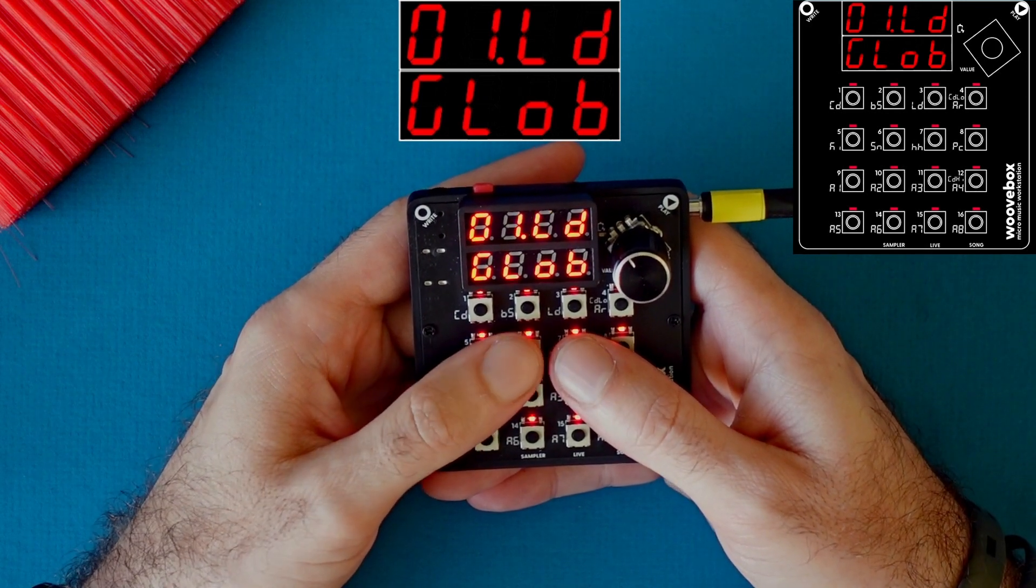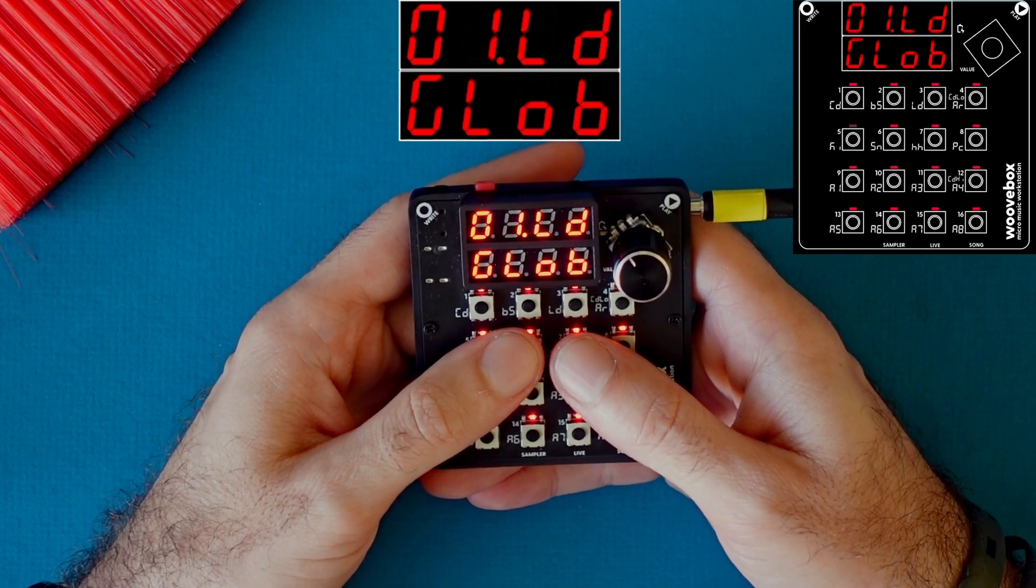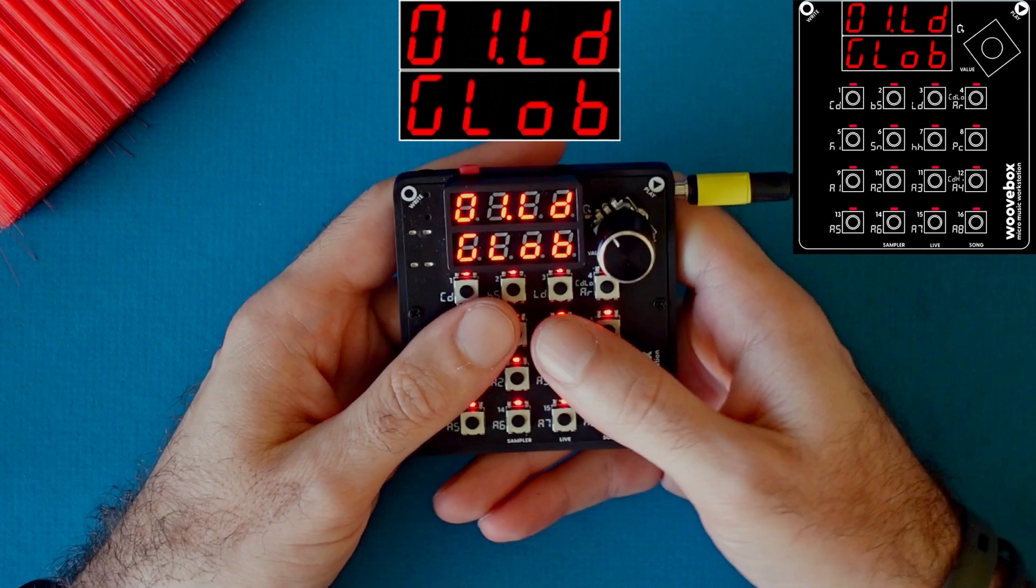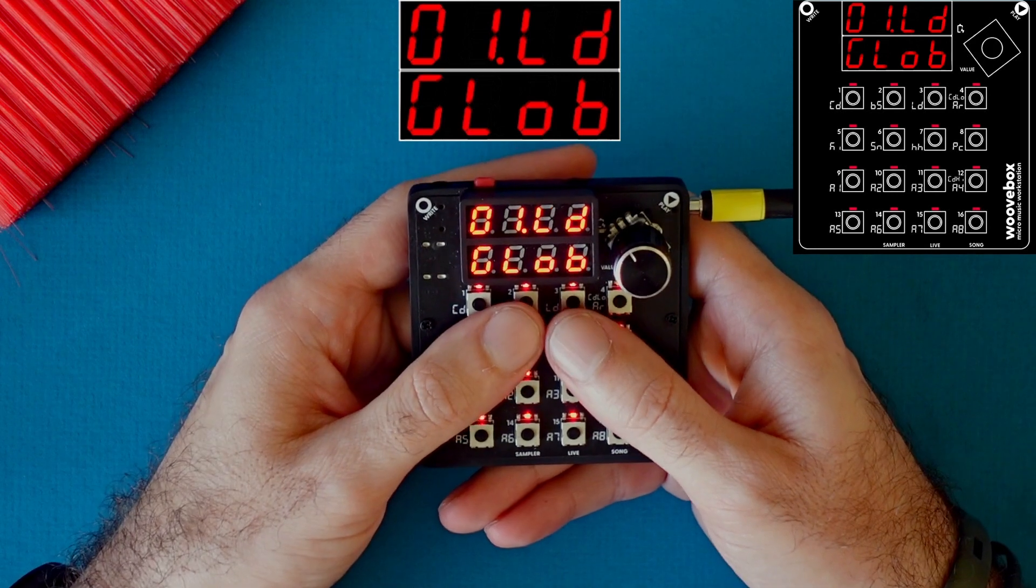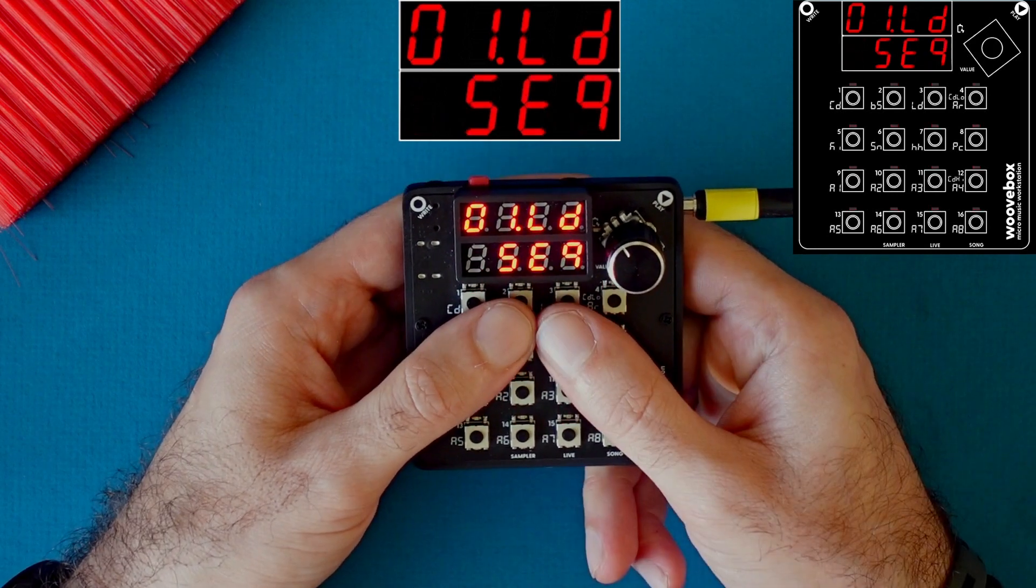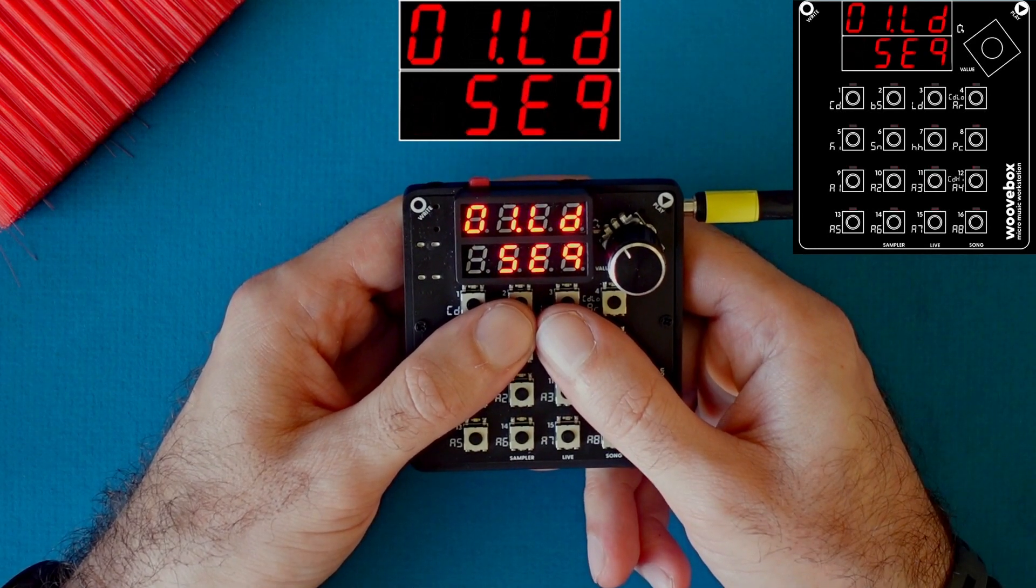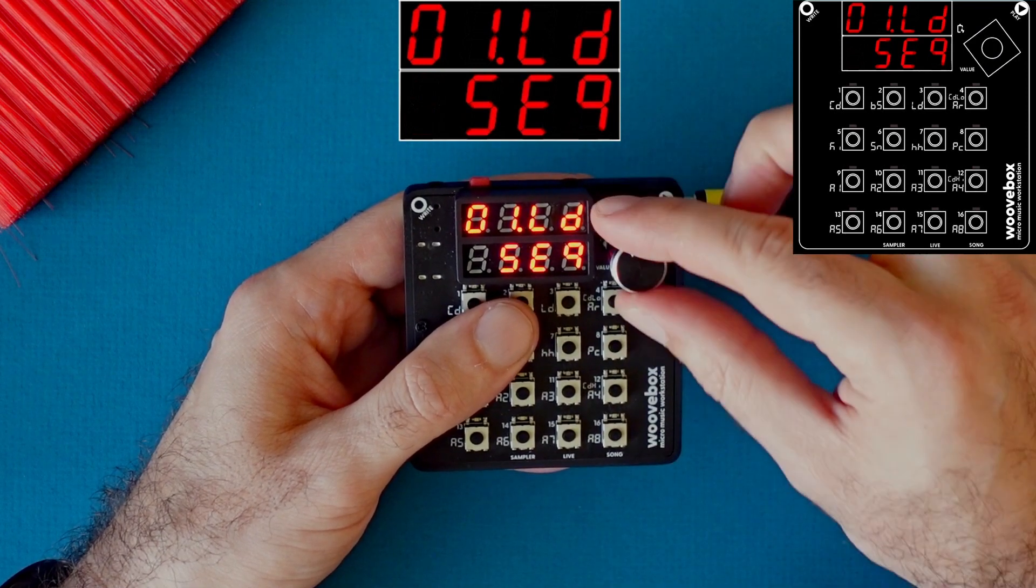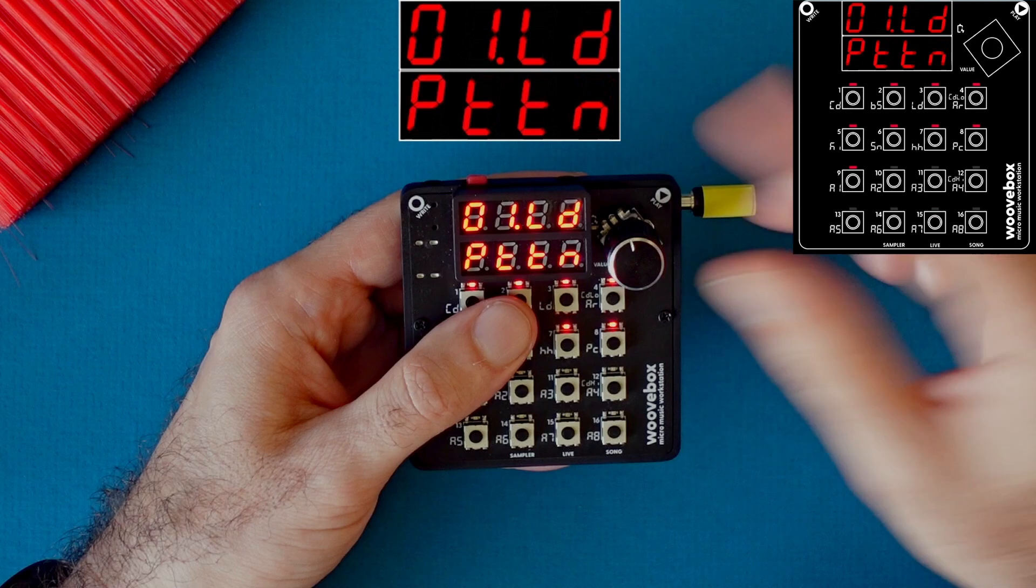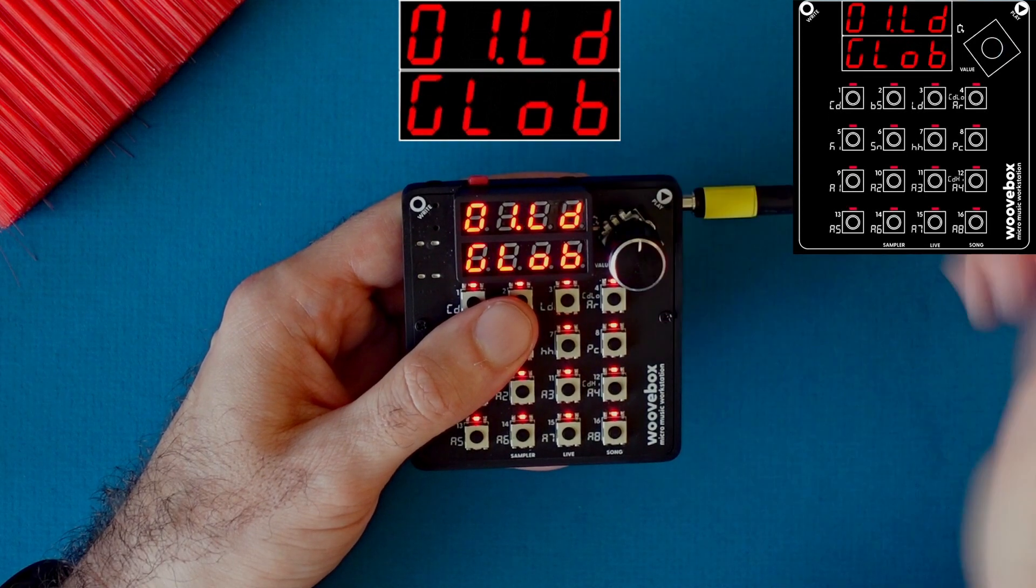Today we're going to talk about the global page. So how do you get to the global page? It's very simple. When you're in the sequencer, you just turn the encoder to the right. You just hit the pattern page and the next one is the global page.